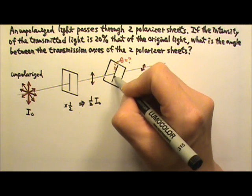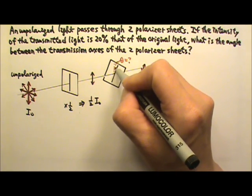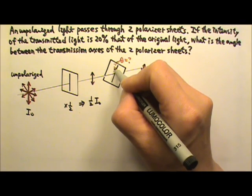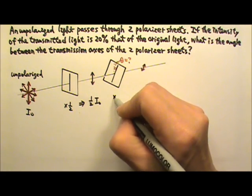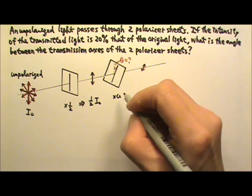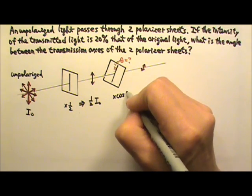And since the component along this direction is adjacent to the angle, that means the component is the original electric field times cosine theta.